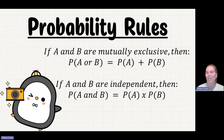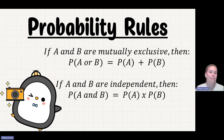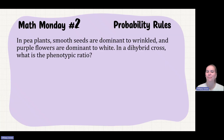If A and B are mutually exclusive, then the probability of A or B is equal to the probability of A plus probability of B. If A and B are independent, then the probability of A and B is equal to the probability of A times probability of B.